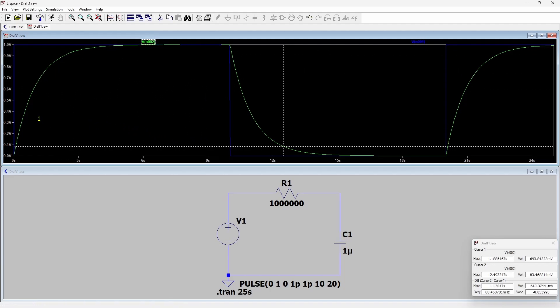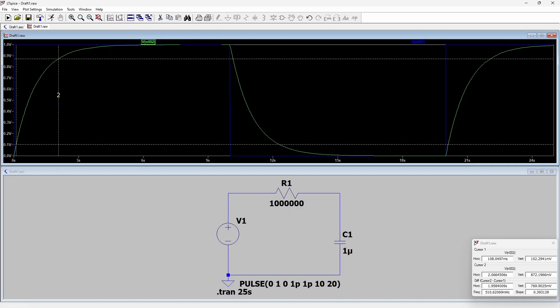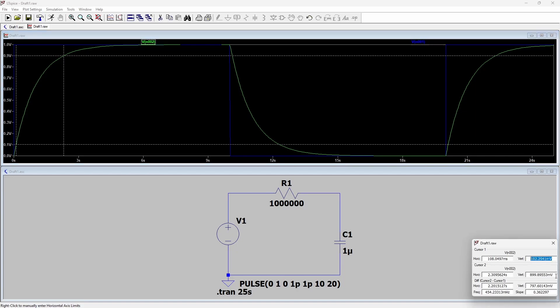I'm going to grab these markers and take them roughly to 100 millivolts and 900 millivolts. So you can see my marker one is roughly 100 millivolts and my marker two is roughly at 900 millivolts.